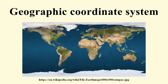In popular GIS software, data projected in latitude and longitude is often represented as a geographic coordinate system. For example, data in latitude and longitude where the datum is the North American Datum of 1983 is denoted by GCS North American 1983.